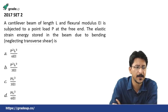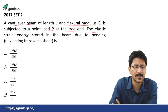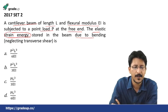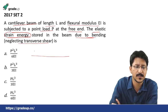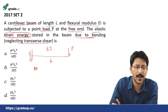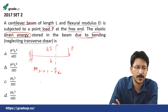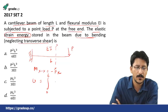GATE 2017, Set 2: A cantilever beam of length L and flexural modulus EI is subjected to a point load P at the free end. The elastic strain energy stored in the beam due to bending — neglecting transverse shear — is asked. The bending moment at any section XX at distance x from the free end is M equals minus P times x.